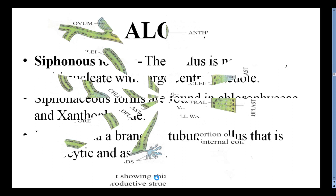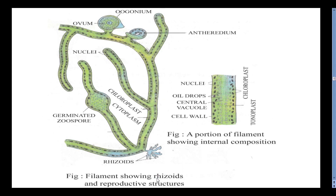Looking at the filamentous form diagram — this is Oedogonium, showing Rhizoidal Thallus, Nuclei, a Germinated Zoospore, Chloroplast, and Cytoplasm. This is the Male Reproductive Structure called Antheridium, and the Female Reproductive Structure called Oogonium, in which the Oogonium is present. A portion of the filament shows internal composition: Nuclei, oil droplets, a central vacuole, outer cell wall, Chloroplasts for photosynthesis, and the vacuole membrane called Tonoplast.